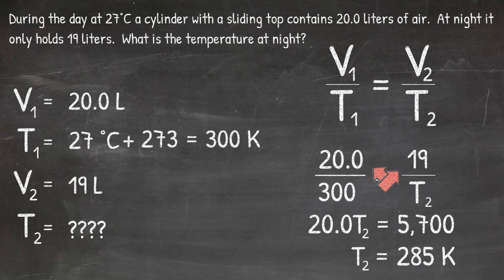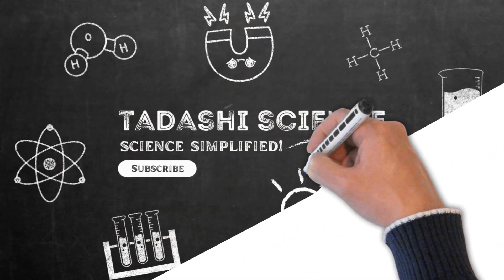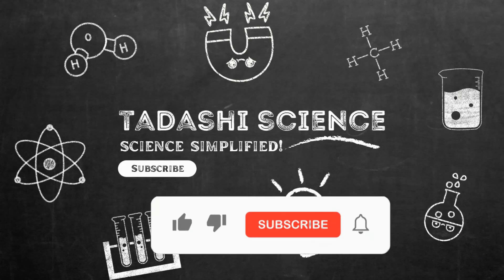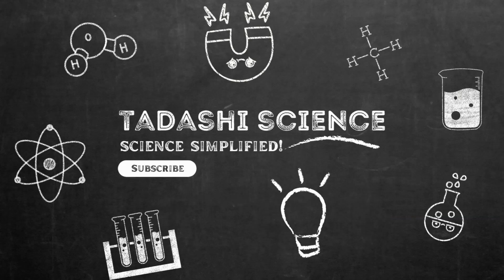We can see here that the temperature has decreased — it started at 300 Kelvin and decreased to 285 Kelvin. And again, according to Charles' law, this makes sense. The volume was also decreasing; it went from 20 liters down to 19 liters. When volume decreases, we also know the temperature has decreased as well. In solving gas law problems, remember it is important that you first look at the variables given in the problem. Once you identify the variables given, you can then choose the correct gas law formula to solve the problem.